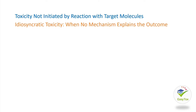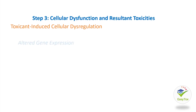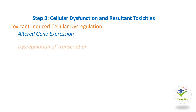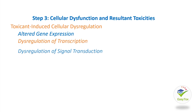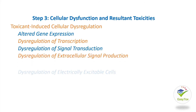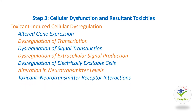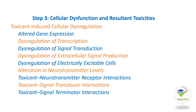Step 3: Cellular Dysfunction and Resultant Toxicities. Subsections are: Toxicant-Induced Cellular Dysregulation, with subsections including Altered Gene Expression, Dysregulation of Transcription, Dysregulation of Signal Transduction, Dysregulation of Extracellular Signal Production, Dysregulation of Electrically Excitable Cells, Alteration in Neurotransmitter Levels, Toxicant-Neurotransmitter Receptor Interactions, Toxicant-Signal Transducer Interactions, Toxicant-Signal Terminator Interactions, and Dysregulation of the Activity of Other Cells.